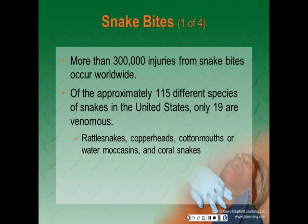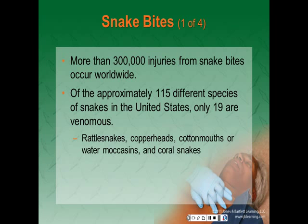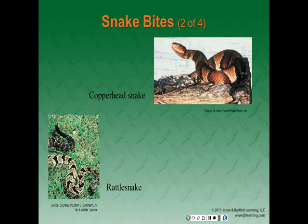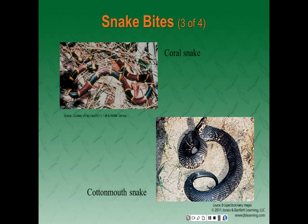Snake bites are a worldwide problem — more than 300,000 injuries from snake bites occur worldwide and 300,000 to 400,000 people die of snake bites worldwide each year. Snake bites in the United States occur less often — about 40,000 to 50,000 are reported yearly, and fatalities are extremely rare at only about 15 a year for the entire country. Of approximately 115 different species of snakes native to the United States, only 19 are venomous — these include the rattlesnake, the copperhead, the cottonmouth or water moccasin, and coral snakes. At least one of these poisonous species is found in every state except Alaska, Hawaii, and Maine.